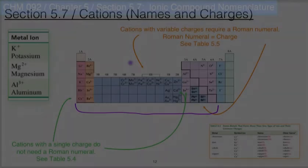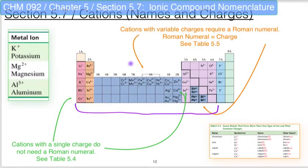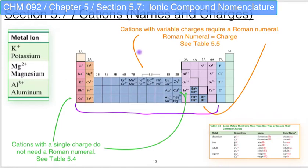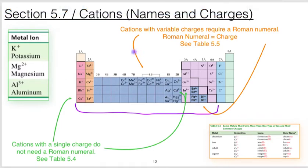In this video I want to focus on ionic compound nomenclature. We learned that ionic compounds are composed of cations and anions.